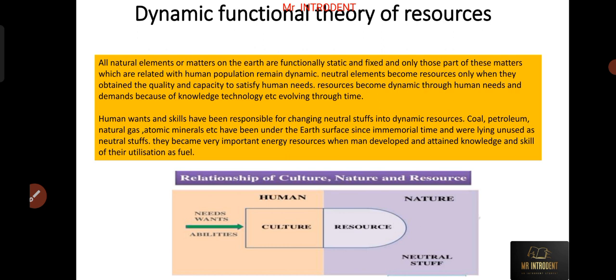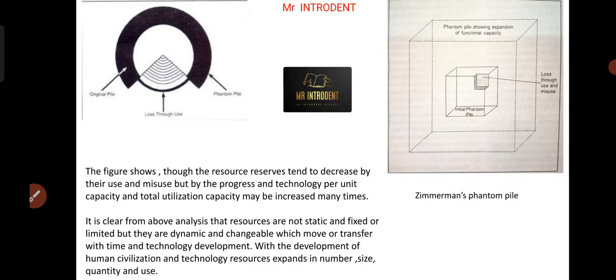Human wants and skills have been responsible for changing neutral stuffs into dynamic resources. For example, coal, petroleum, natural gas, atomic minerals—all have been part of earth's surface for immemorial time. But when human came in and thought about how to use coal, how to prepare fuel out of it, how to use it in producing energy, then only these became resources. So this is the dynamic functional theory of resources. Now the phantom pile part of this.